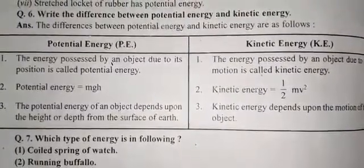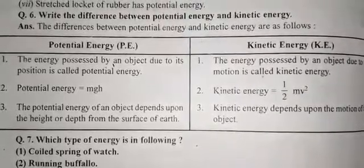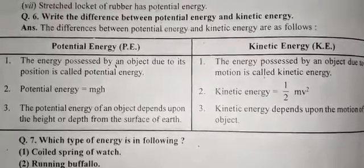First of all, potential energy. The first point is: the energy possessed by an object due to its position is called potential energy.